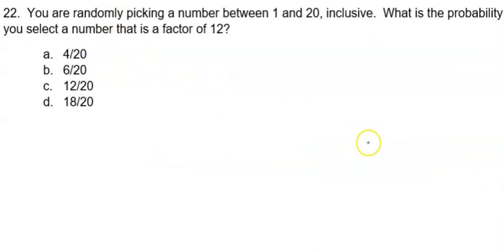You are randomly picking a number between 1 and 20 inclusive. What is the probability you select a number that is a factor of 12? When I ask for a factor of 12, I want to know what two numbers multiply to give me 12. Those would be the factors of 12.